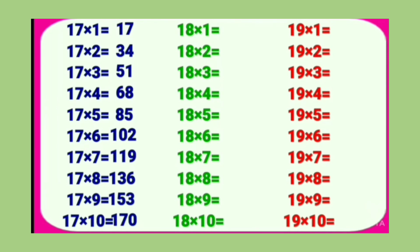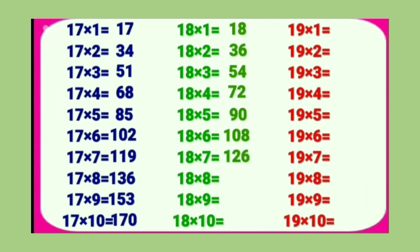Table of 18: 18 1's are 18, 18 2's are 36, 18 3's are 54, 18 4's are 72, 18 5's are 90, 18 6's are 108, 18 7's are 126, 18 8's are 144, 18 9's are 162, 18 10's are 180.